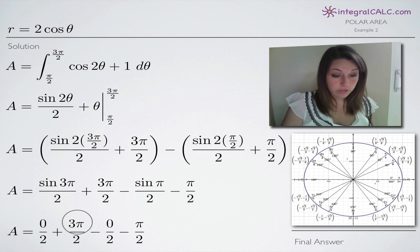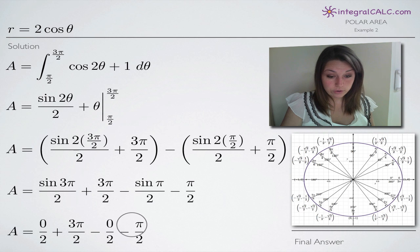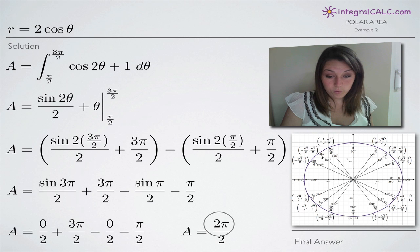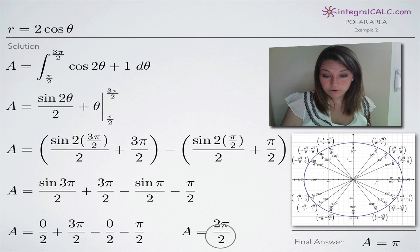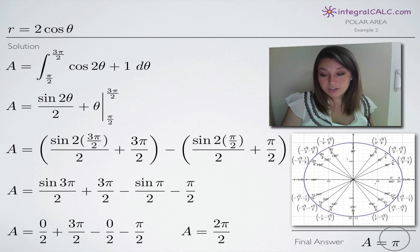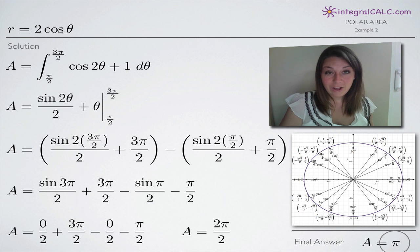With the sine terms equal to zero, we're left with three pi over two minus pi over two, which equals two pi over two. Canceling the twos gives our final answer: the area of the function r equals two cosine theta is equal to pi. Hope that helped, and I'll see you in the next video!